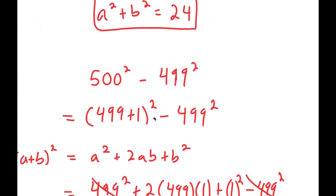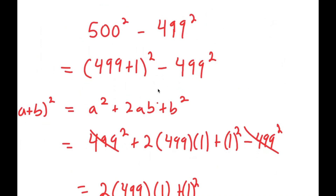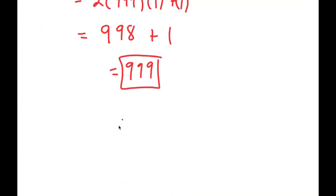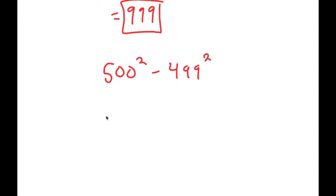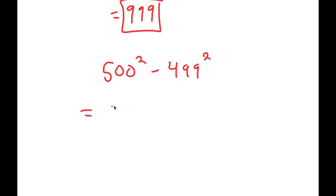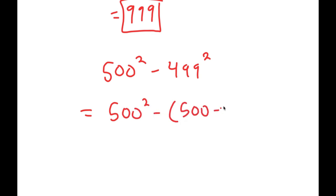Now I actually have another method of solving this. So I have 500 squared minus 499 squared, and this time I'm going to write this as 500 squared minus 500 minus 1 squared.